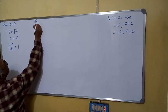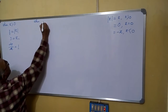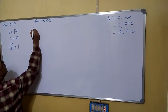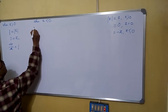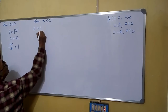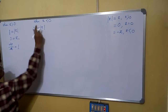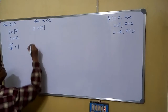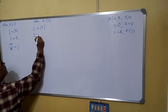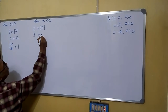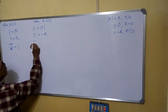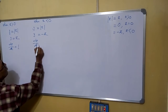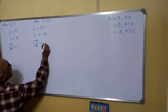Now when x is less than 0, we can write again y equals mod x, and mod x when x is less than 0 is minus x. So y equals minus x. So dy/dx equals minus 1.